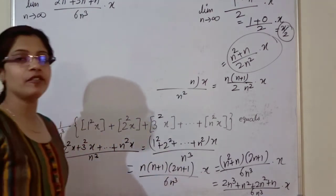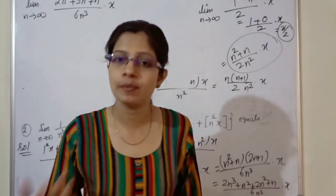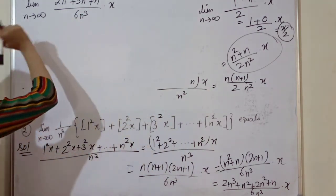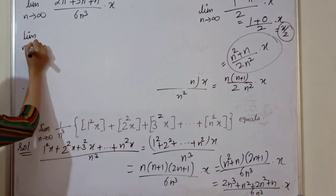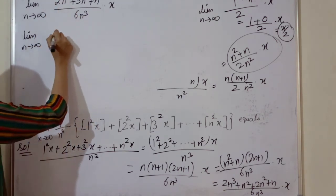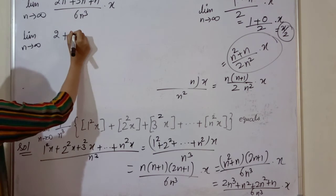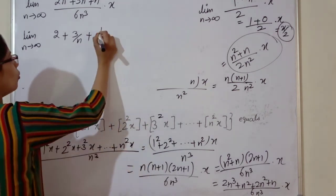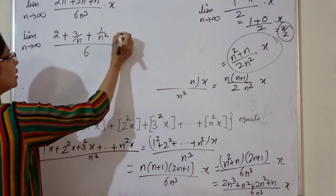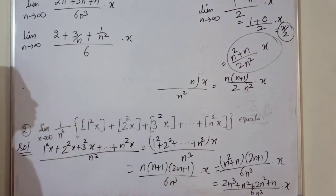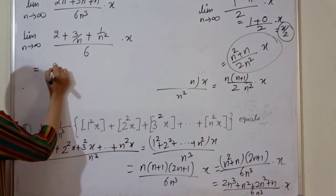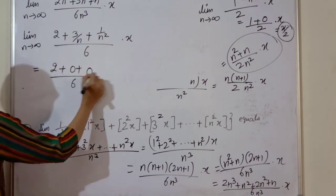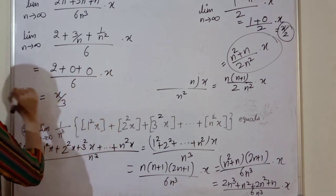As n approaches infinity, the denominator goes to infinity — undefined form — so we divide numerator and denominator by n cube. We get 2 plus 3 by n plus 1 by n squared, divided by 6. As n approaches infinity, 3 by n goes to 0 and 1 by n squared goes to 0, giving the answer x by 3.